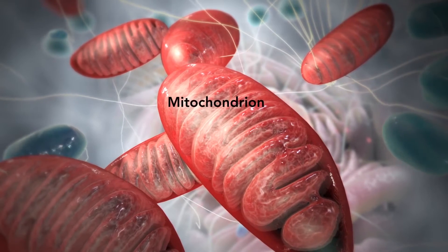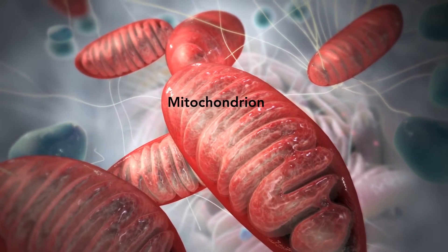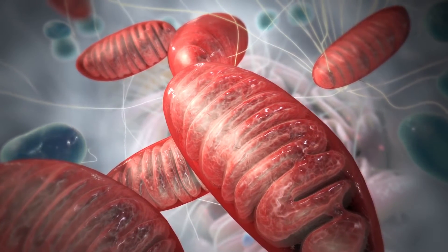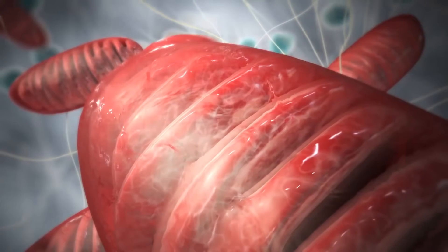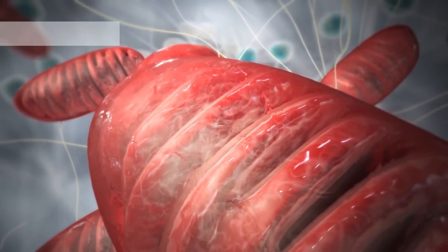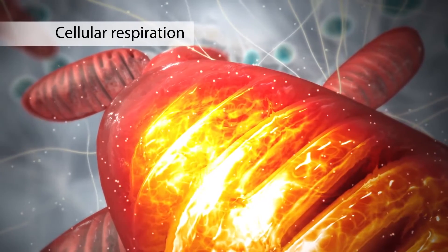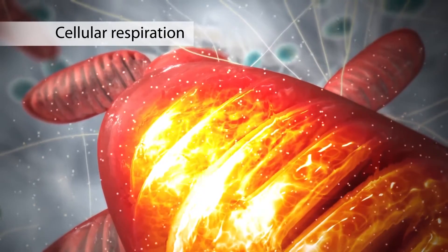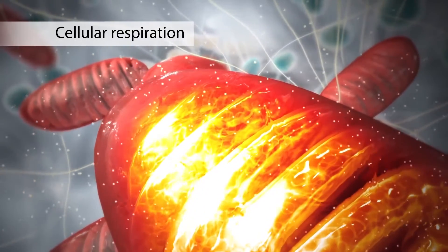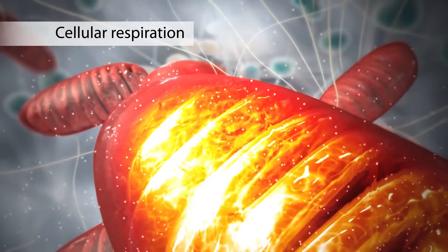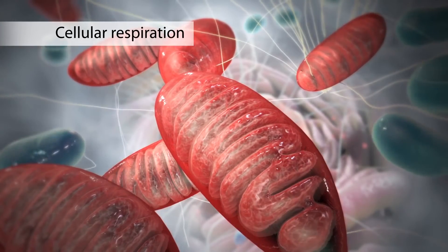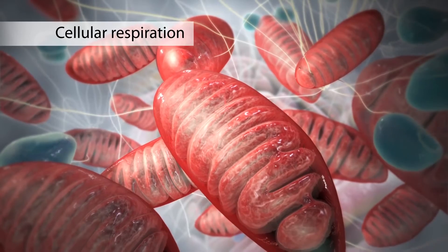The mitochondrion is an organelle that is the powerhouse for both animal and plant cells. During a process called cellular respiration, the mitochondria make ATP molecules that provide the energy for all of the cell's activities. Cells that need more energy have more mitochondria.